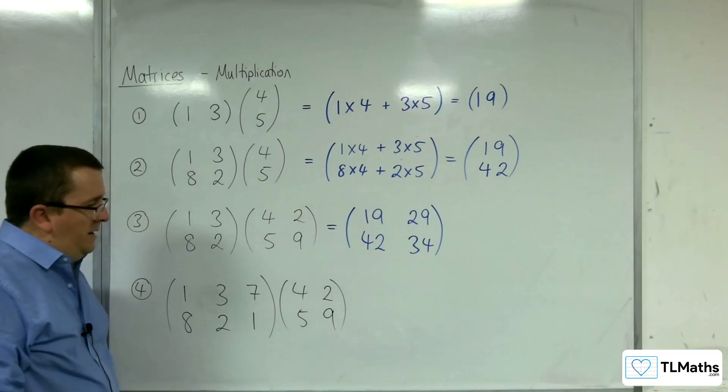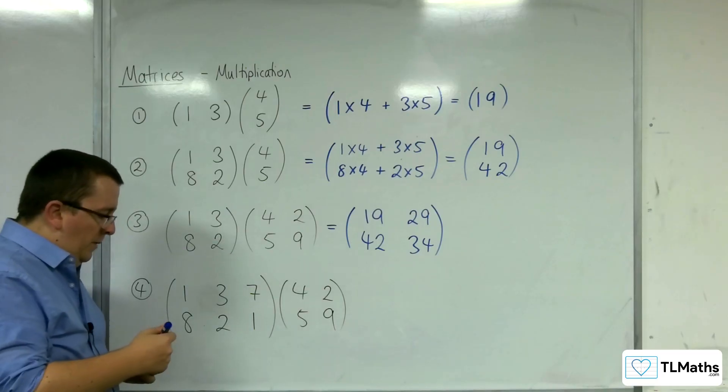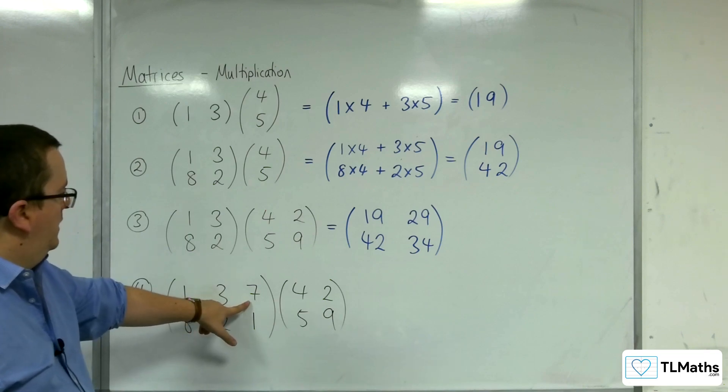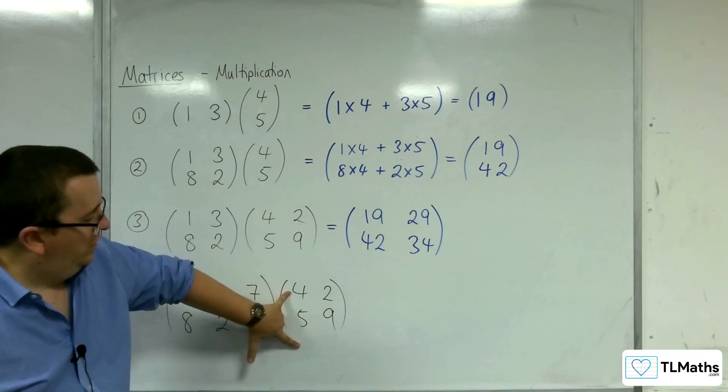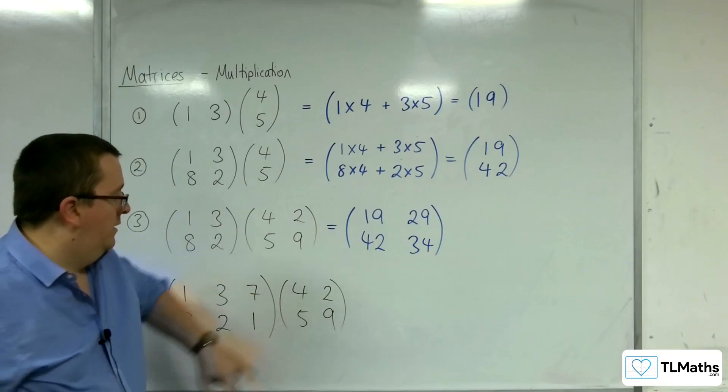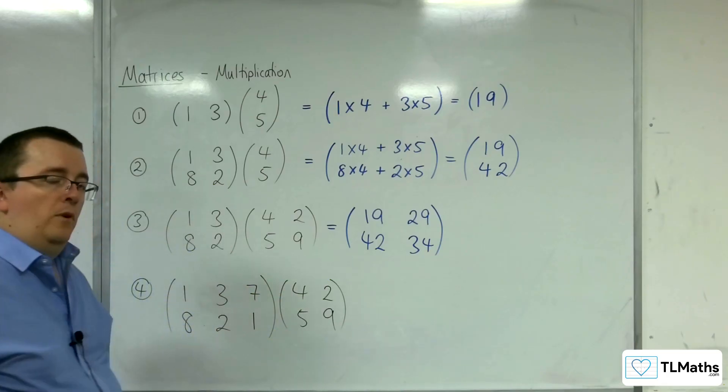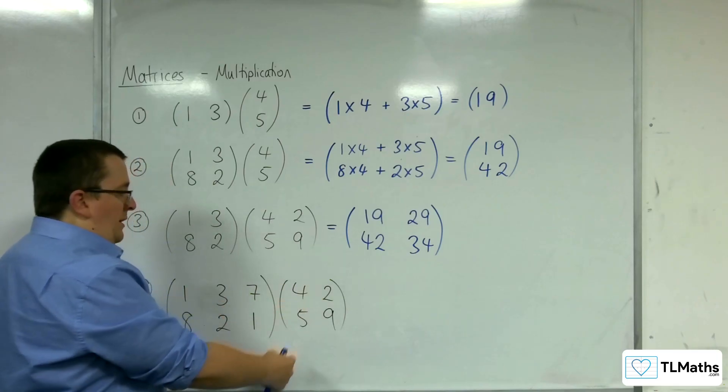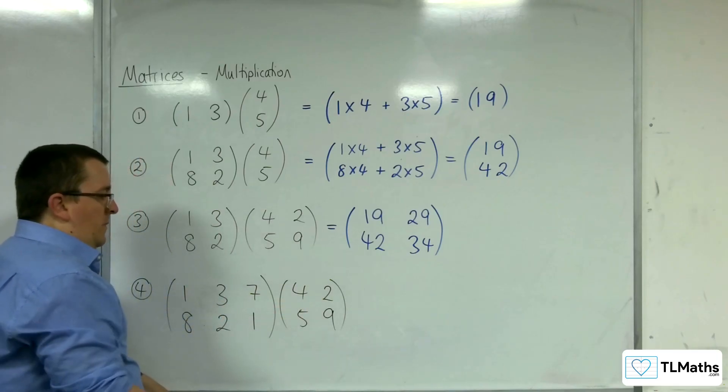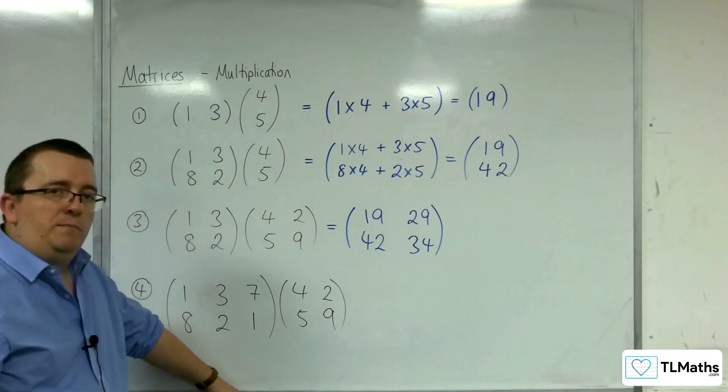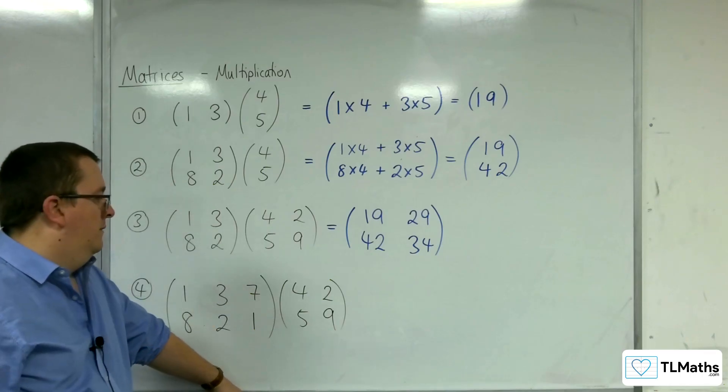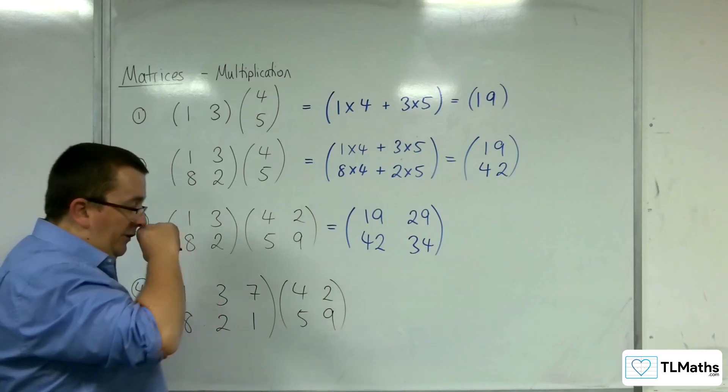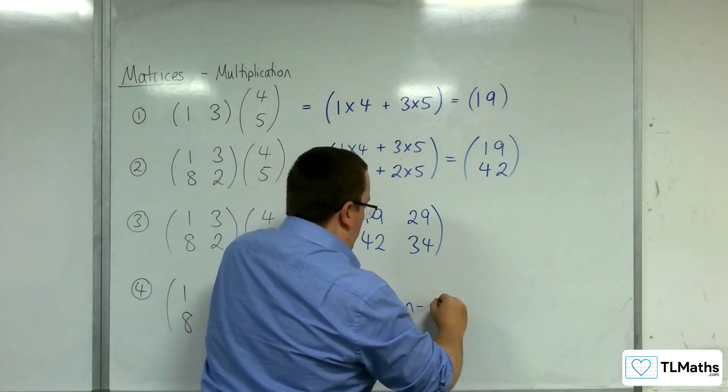Now, if we had a look at number 4, the problem here is that we have this row, 1, 3, 7, and it doesn't match with the correct number of terms in a column here. Because I've got 1, 3, 7 here, I've got 3 numbers and only 2 numbers there, I cannot multiply these two matrices together. There is this missing value. And so, these two matrices are non-conformable.